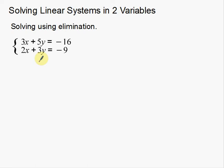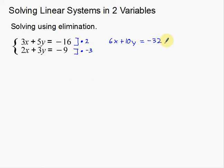It doesn't really matter which variable you eliminate. I'm going to eliminate the x's — two reasons: 6 is smaller, so I multiply the top equation by 2 and the bottom by 3. Also, in the last example we eliminated y's, so this time I'll eliminate x's. I'm actually going to multiply the bottom by negative 3. Multiplying everything by 2 gives 6x plus 10y equals negative 32. Multiplying everything by negative 3 gives negative 6x minus 9y equals positive 27.